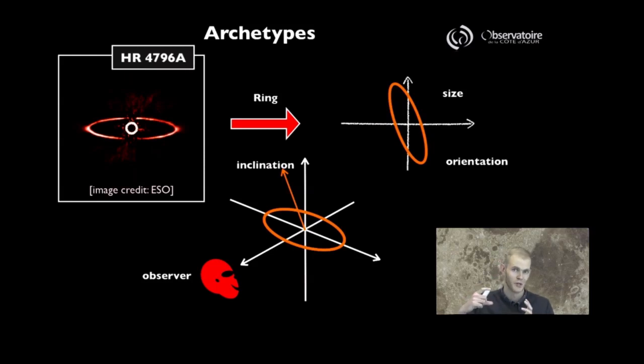because it's no longer circular symmetric, is also characterized by some orientation on the sky. So that makes three degrees of freedom to describe this thing.